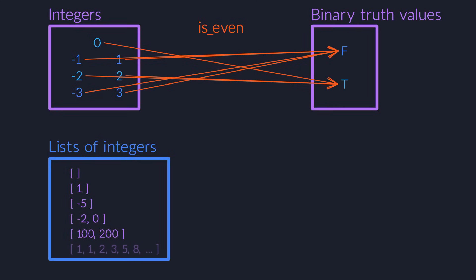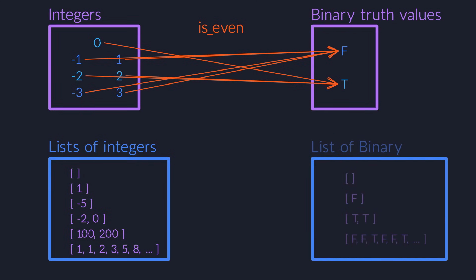You won't be able to store those in a real computer, but we're doing mathematics here, so infinity is just fine. Likewise, we also want to be able to store lists of truth values. So it looks like we need some new kind of constructor that can take an existing type, like integer, and turn it into a new type, like list of integer.